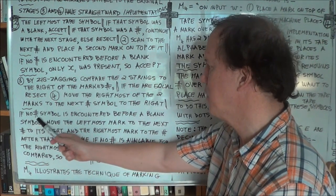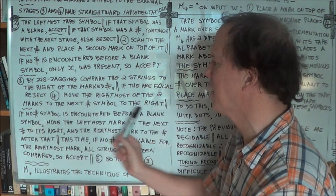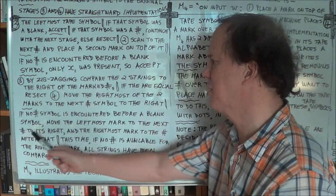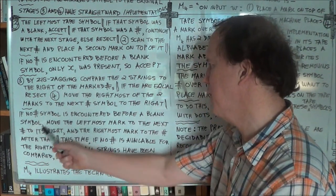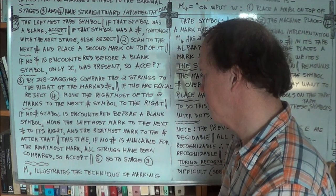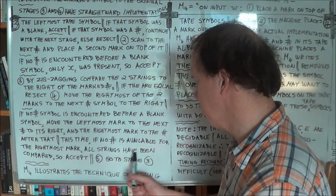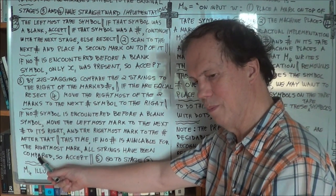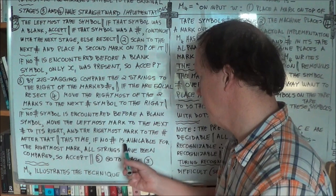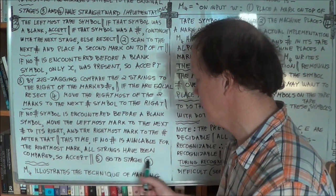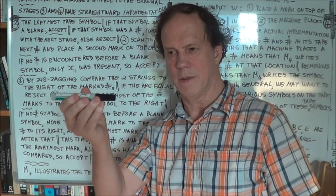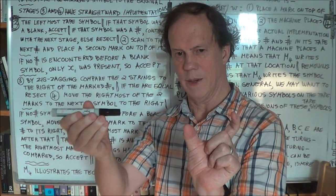If you don't find a next hash — if this second marker is sort of at the end and there's no hash symbol before you get to a blank — then move your leftmost marked symbol to the next hash to its right, and so on. You just keep doing that. Eventually, if there's no hash to the right, all strings have been compared and if you get to that stage you know they're all different, so accept. If there is another hash, go back to stage three — you're in this loop. You can try to picture it visually: here's your string A you're comparing, and here's string B, and you compare and say they're different.